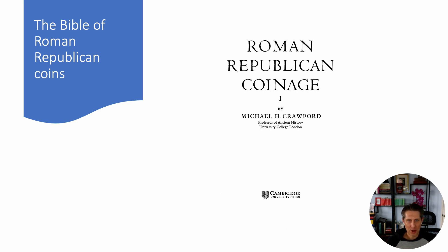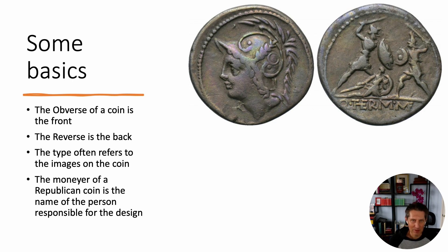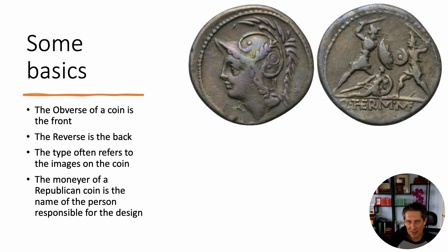Crawford is your starting point. When we're looking at a coin, these are some of the basics. The obverse of the coin is the front — what we would say in a modern context is the 'head.' The tail is the reverse. This is one of my absolute favorite coins, issued by a moneyer around the year 100 BC. On the front you have an image of Roma — it's a very beautiful coin. On the reverse you have an image of one of the ancestors of the moneyer fighting in a battle. The coin is just striking.